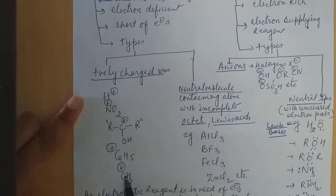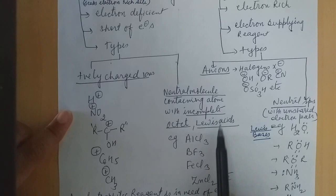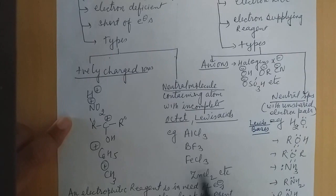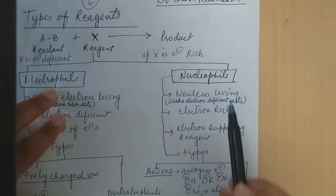Carbocations also behave like electrophiles. If we talk about neutral molecules, all the Lewis acids which are not octet complete, they are all electrophiles. Like AlCl3, BF3, FeCl3, ZnCl2 — they are all examples of Lewis acids and electrophiles.